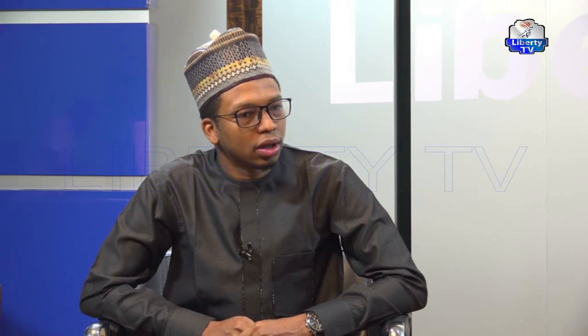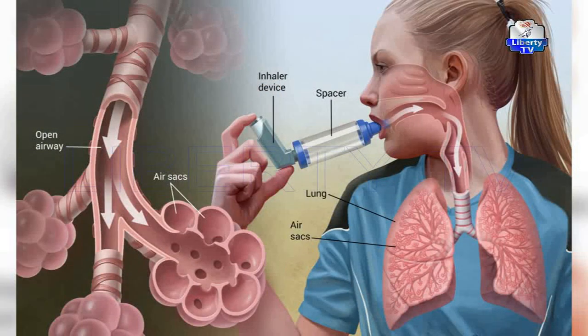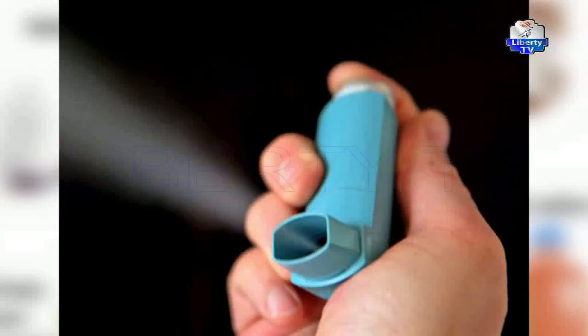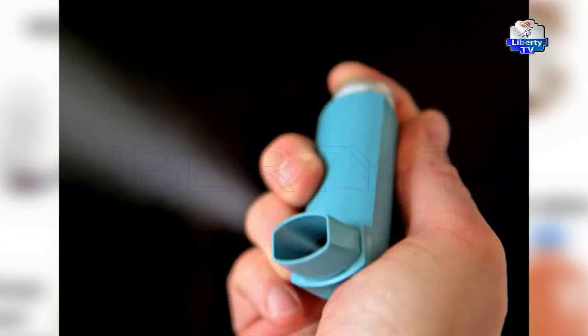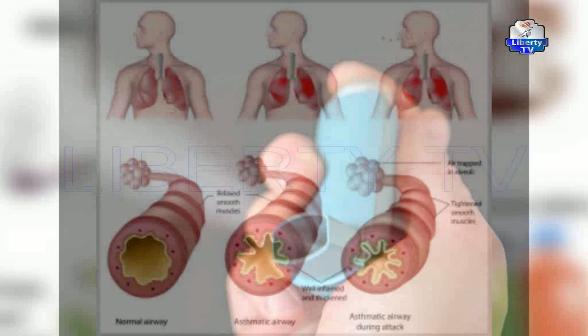Are there different types of asthma? Well, we wouldn't say asthma is just asthma, but there are different classifications. We have occupational asthma, adult-onset asthma, pediatric asthma, and pregnancy-induced asthma.